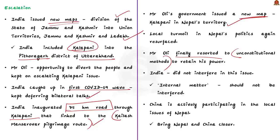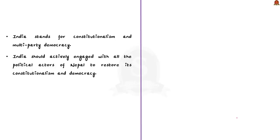India has so far not interfered in this issue, believing Nepal's political turmoil is an internal matter. However, China is actively participating in Nepal's local issues, bringing China and Nepal closer together, which is not favorable to India. India stands for constitutionalism and multi-party democracy. The author concludes that India should actively engage with all political actors of Nepal to restore its constitutionalism and democracy — the path beneficial to both Nepal and India in the long run.